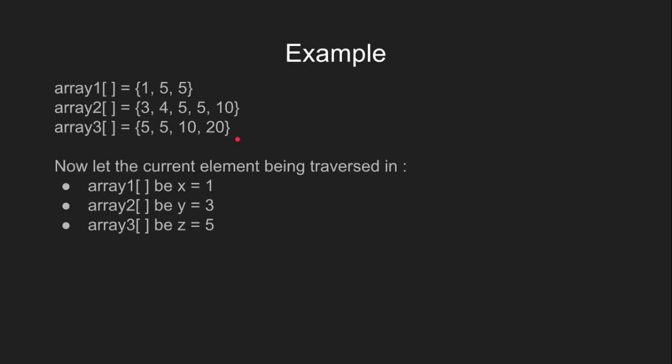Let us now look at an example step by step. I have just picked up an example from the starting of this tutorial. Array 1 has elements 1, 5, and 5. Array 2 has elements 3, 4, 5, 5, and 10. Array 3 has elements 5, 5, 10, and 20. As we can clearly see, these arrays are sorted in increasing order.